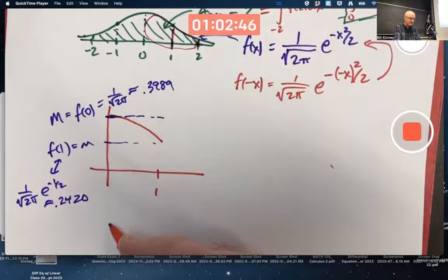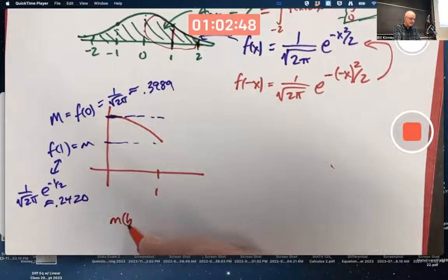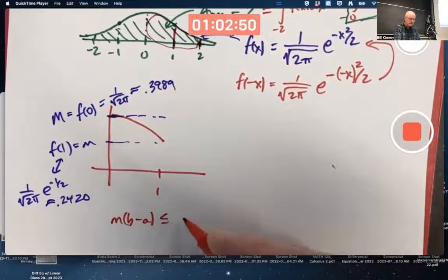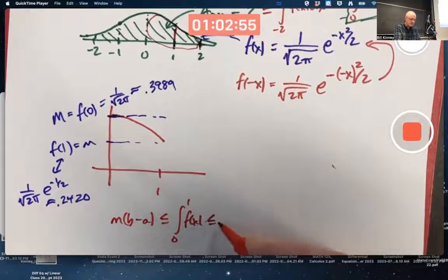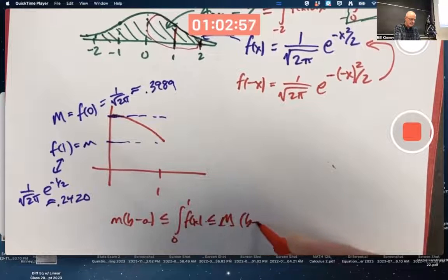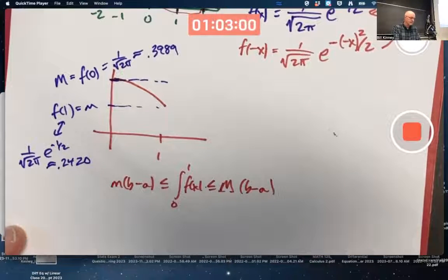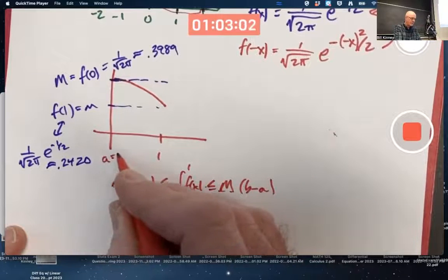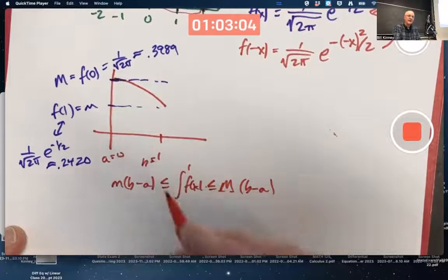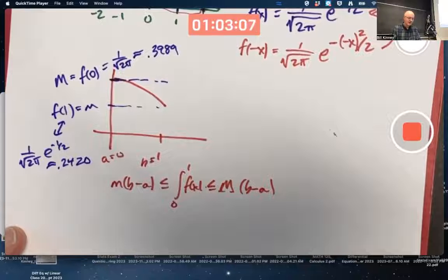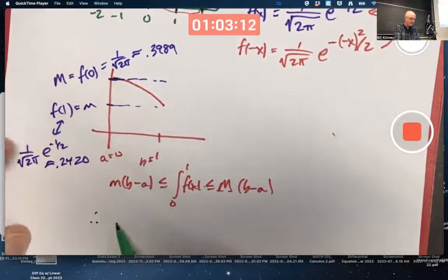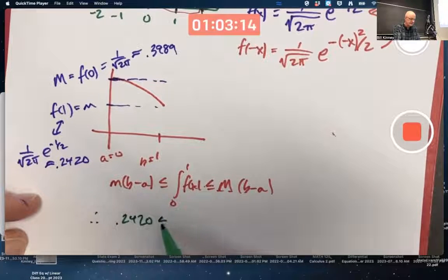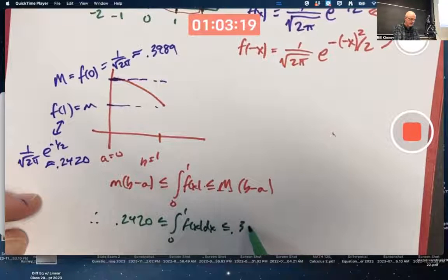Now, because of this, the integral is going to be between, now it's the integral from 0 to 1, it's going to be between these two values. A is 0, B is 1, B minus A is 1, therefore the integral is going to be between these two numbers. Therefore, 0.2420 is less than or equal to the integral, is less than or equal to 0.3989.